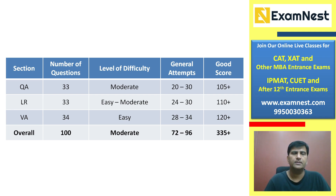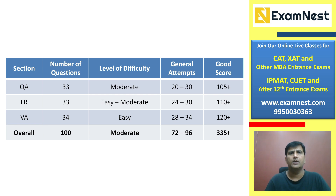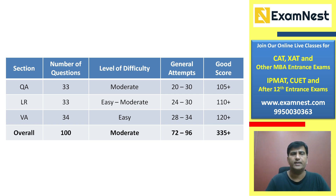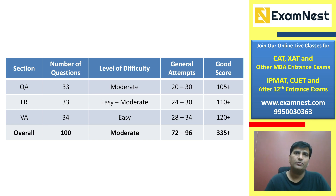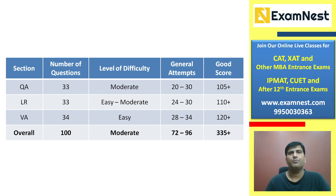335 plus overall score अच्छा score है। अब आप इसे last year के scores से compare नहीं कर सकते क्योंकि last year 10th और 12th को weightage IIM Jammu ने नहीं दिया था और gender diversity का heavy weightage था। इस बार Jammu की merit list majorly written test पर बन रही है — 95% weightage written test को है और 5% gender diversity को। Females को 5 marks का advantage है।